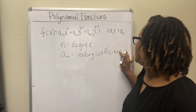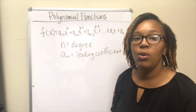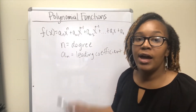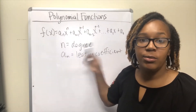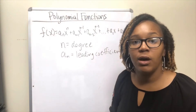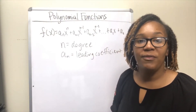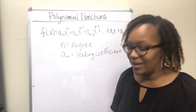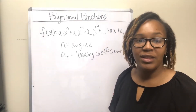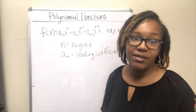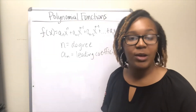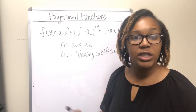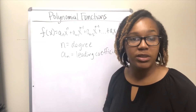The leading coefficient aₙ is the coefficient leading all the others. In this video we're going to look at how to determine end behavior of a polynomial and also how to factor polynomials and find zeros. There's another video I recommend for digging deeper into polynomial functions, but let's jump into some examples.